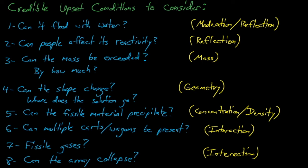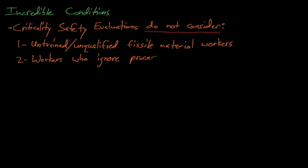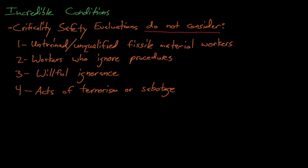Criticality safety evaluations do not need to consider the following abnormal conditions. First, fissile material workers who are untrained or unqualified. Second, workers who ignore procedures or who might willfully ignore safety protocols. And lastly, we do not need to consider any acts of terrorism or intentional sabotage. So criticality safety evaluations instead assume that these events are not credible. If any of these events, however, are credible, then fissile material operations must immediately be paused until the offending conditions can be fixed. We cannot prevent a criticality accident if workers are intentionally trying to cause an accident or if they are grossly ignoring safety limits. And it's not reasonable for us to design fissile material operation limits around intentionally unsafe actions. Instead, we must guarantee that these unsafe conditions are not credible during fissile material operations.